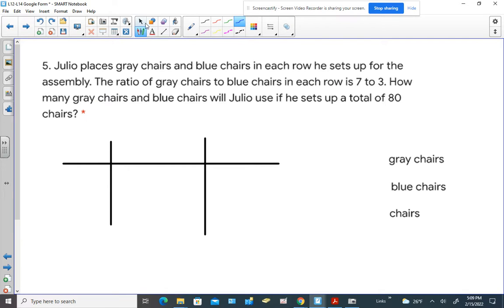All right, so what are the categories that they're talking about here? I see we're talking about gray chairs and blue chairs, so let's write the numbers that we have. The ratio of gray chairs to blue chairs in each row is seven to three. So seven has to go with gray because it's listed first, and blue chairs go with the number three.